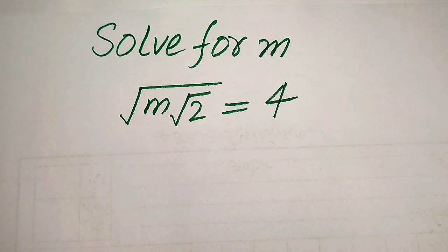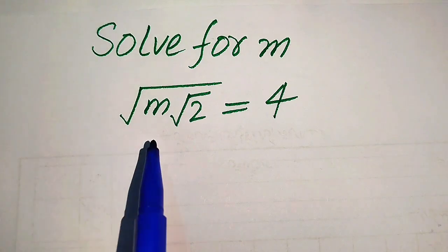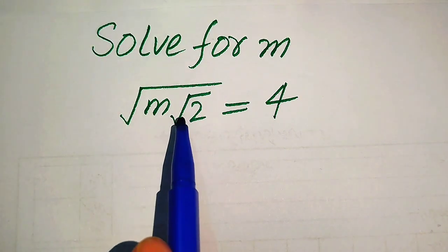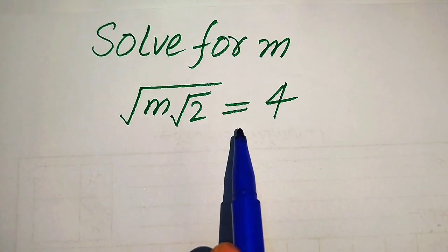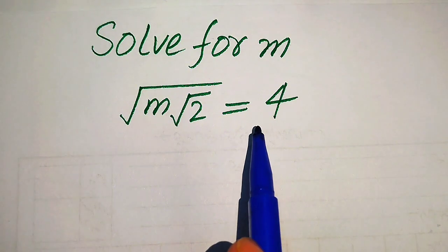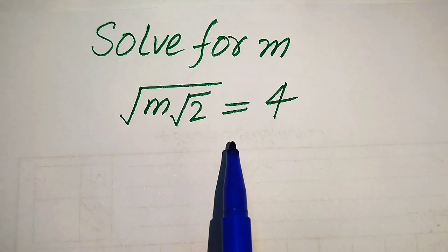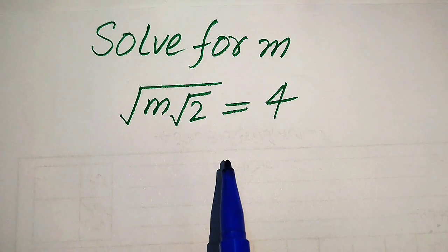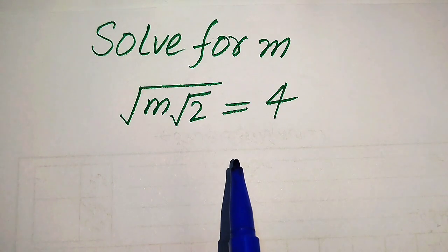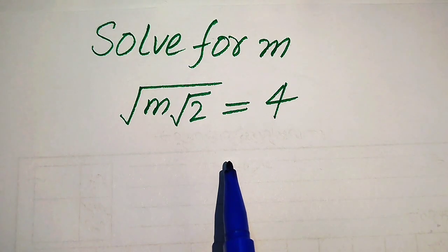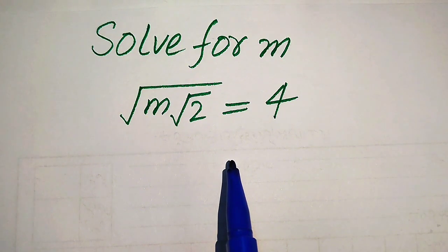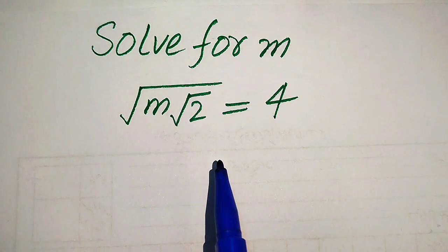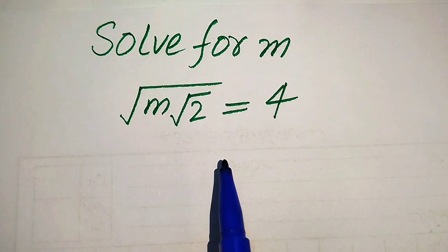Hello everyone. How to solve this problem for the values of m, if we have square root of m inside the square root of 2, equals to 4. We solve this problem for the values of m. First we find all the roots of this equation, and at the last we will check which of these roots are solutions and which are extraneous roots of this equation.